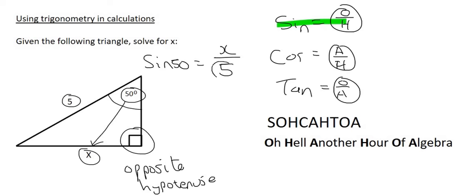You then get the x alone by taking this 5 up to the top. And so you're going to have 5 sin 50 equals to x. And then you just type that in on the calculator, and that's going to give you an answer of 3.83.